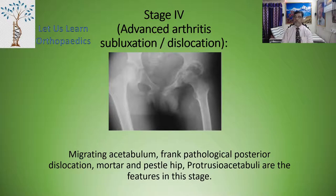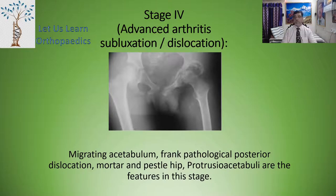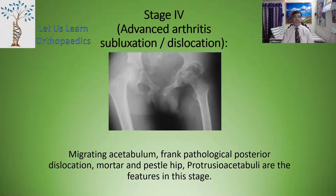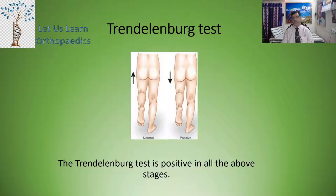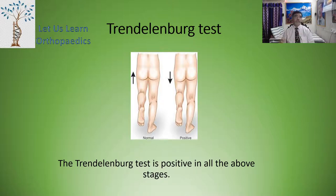Stage 4 — advanced arthritis with subluxation or dislocation. Features include migration of the acetabulum, frank pathological posterior dislocation, mortar and pestle hip, or protrusio acetabuli. The Trendelenburg test is positive in all the above stages.